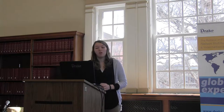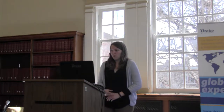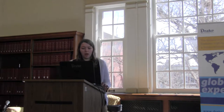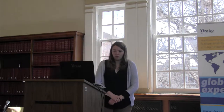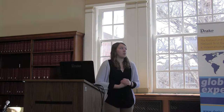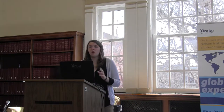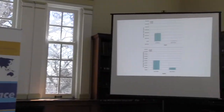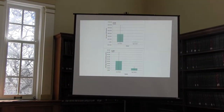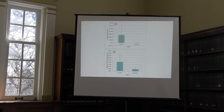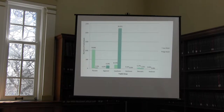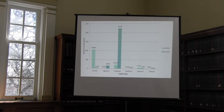Catch per unit effort is a measure of how easy it is to catch fish by weight or by number. The top graph shows grams per hour and the bottom graph shows number of individuals per hour. In both cases, it was much easier to catch far more fish in the low water season. This also explains the ease piscivores have in that season.